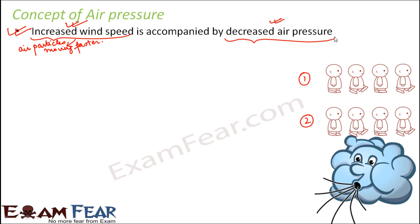So in any region where wind speed has increased — for example, sometimes after heavy rain you will see that wind speed is very high — the air pressure in that particular area decreases.